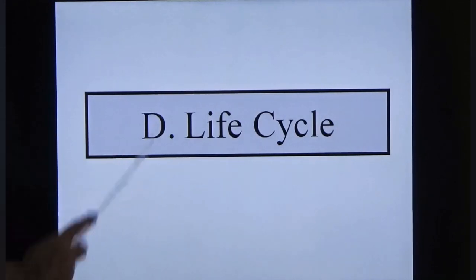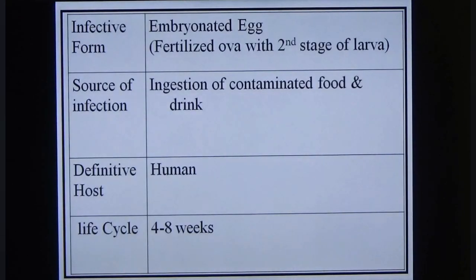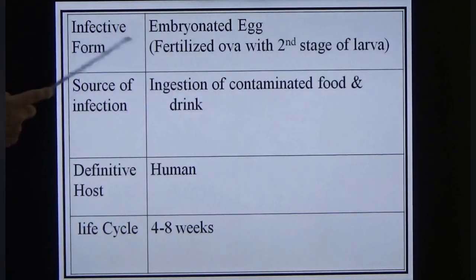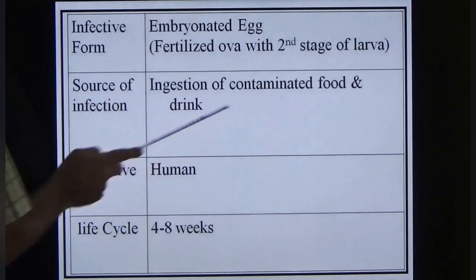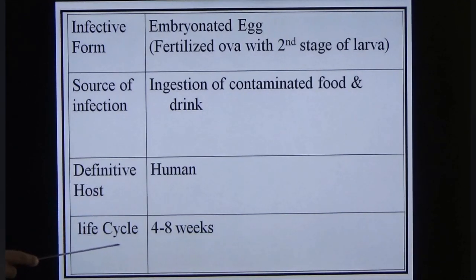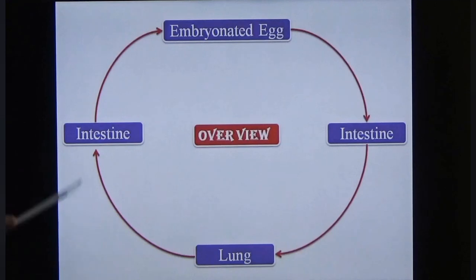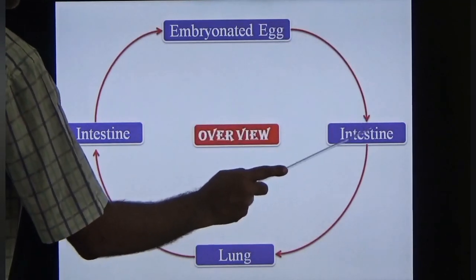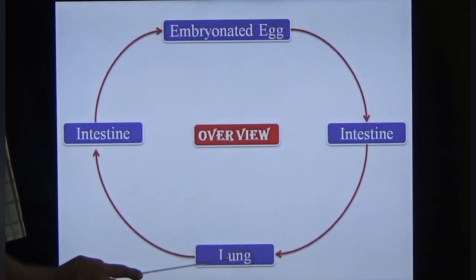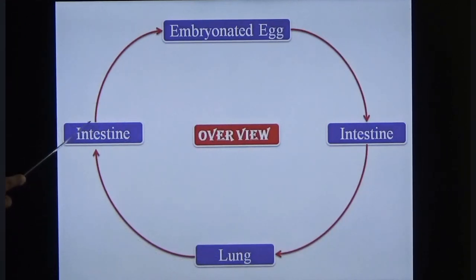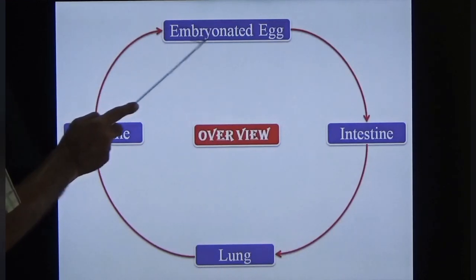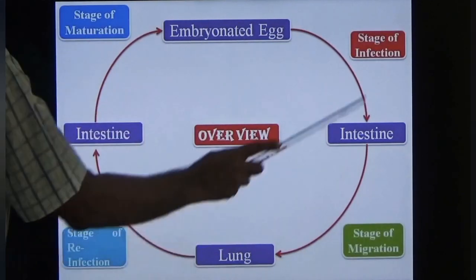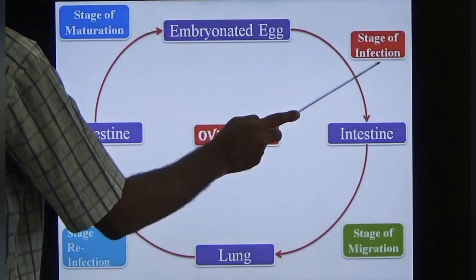Life cycle overview: the infective form is the embryonated egg. Source of infection is ingestion of contaminated food and water. The definitive host is the human. The total life cycle duration is 4–8 weeks. The embryonated egg enters the intestine, migrates to the lungs, re-enters the intestine, and then forms embryonated eggs again to continue the cycle.